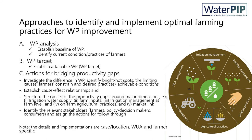One could follow this approach to identify and implement optimal farming practices for water productivity improvement. The first step is water productivity analysis — establishing a baseline of the water productivity of the crop and identifying the current conditions and practices of farmers. The second step is establishing the attainable water productivity or water productivity target. The third step is identifying actions for bridging productivity gaps, including investigating differences in water productivity and identifying bright hotspots, limiting causes, and achievable conditions.